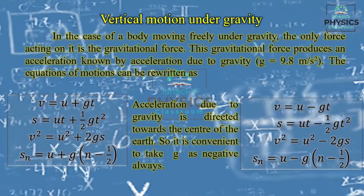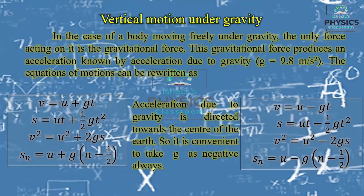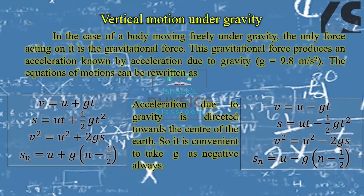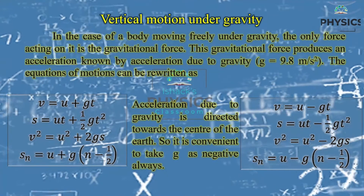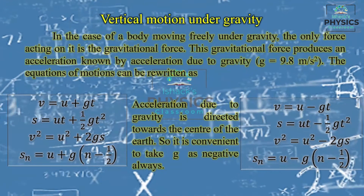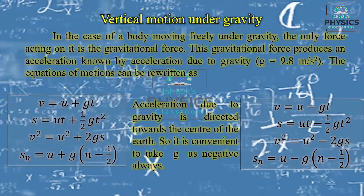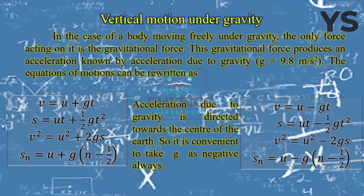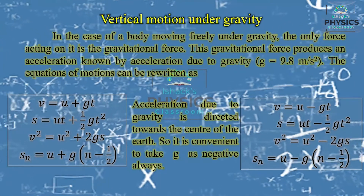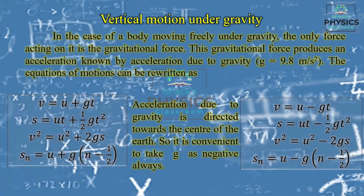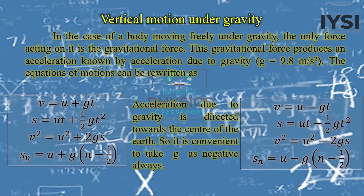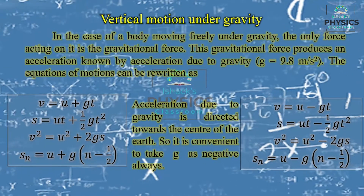In the NCERT textbook, if you have a problem on equations of motion involving free fall, the equations are v = u - gt, s = ut - ½gt², v² = u² - 2gs, and Sₙ = u - g(n - ½), where g = 9.8 m/s². If you write minus 9.8, the double negative cancels and gives 9.8.